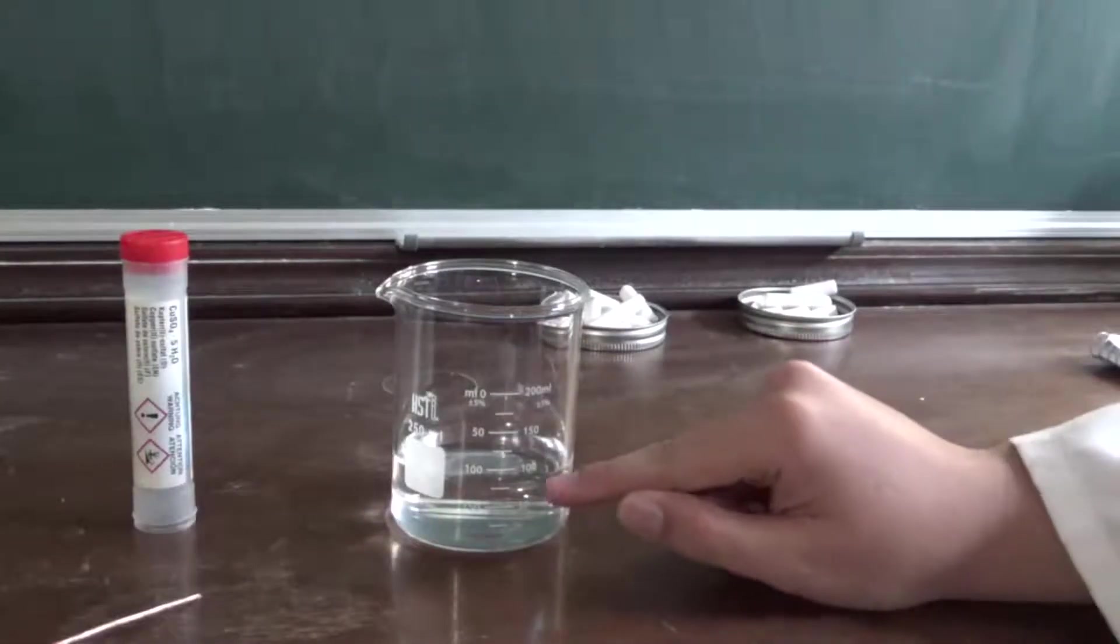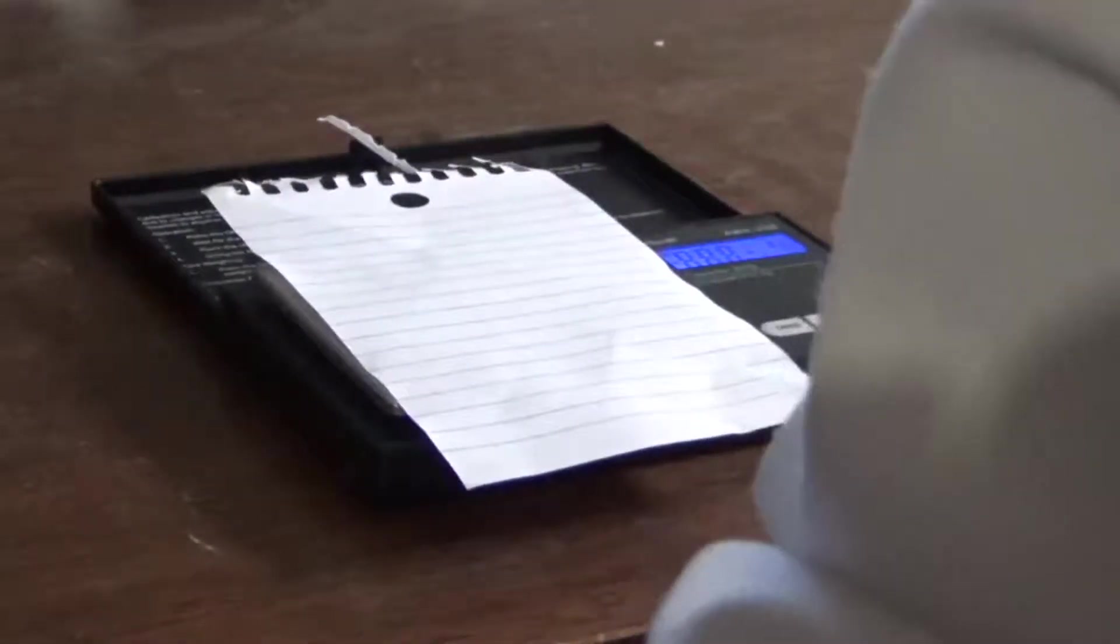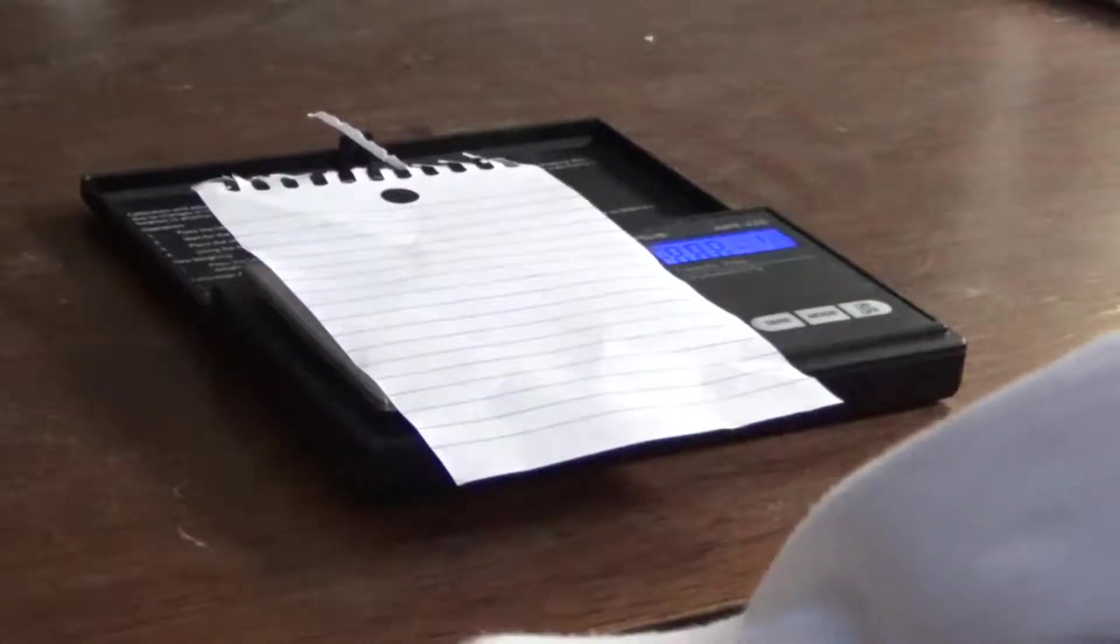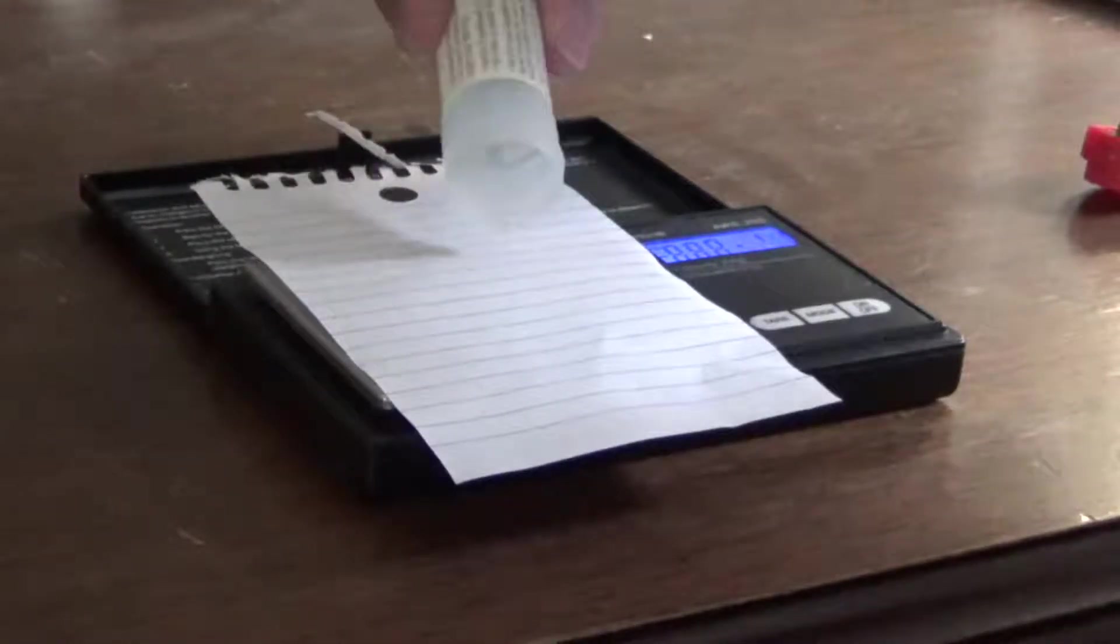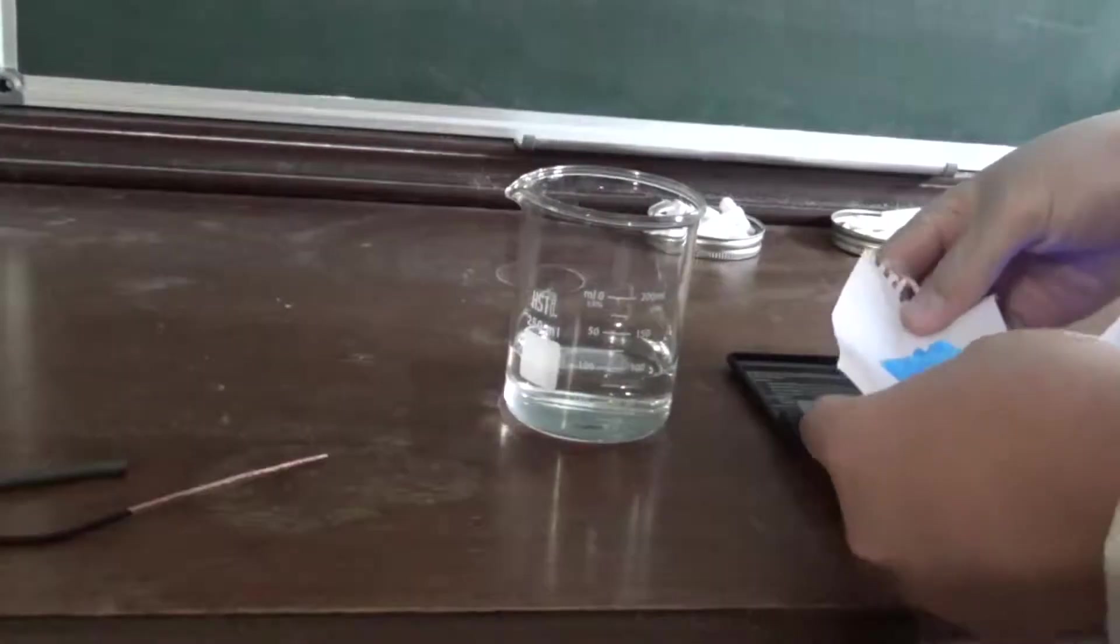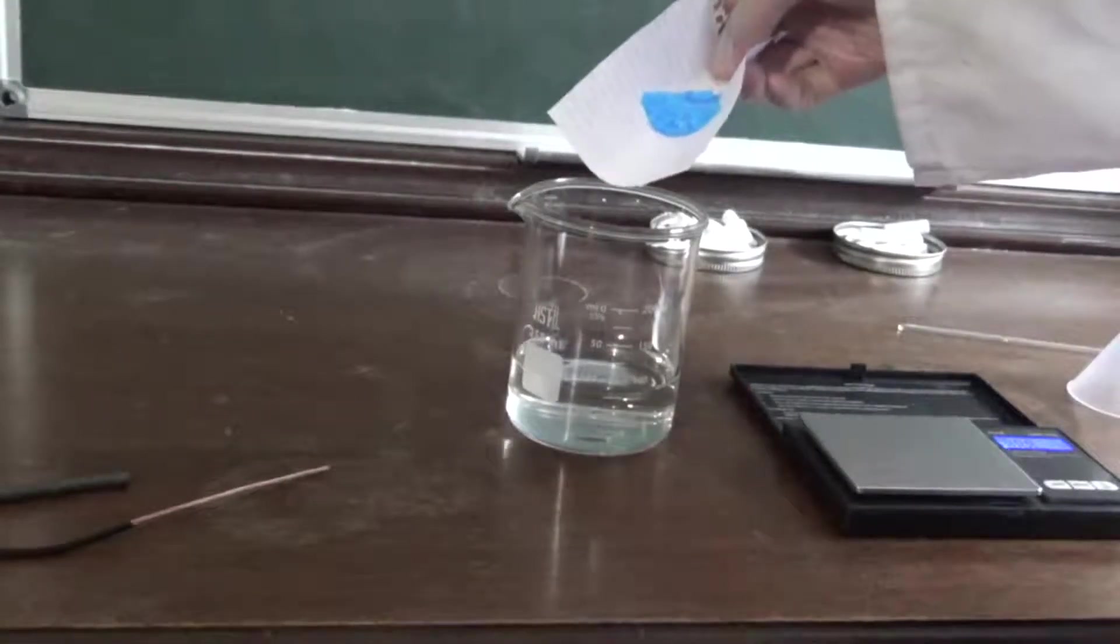Now we have a bit under a hundred milliliters of distilled water and to that we will add approximately around six grams of our copper two sulfate. I'm using a piece of paper as a weighing paper, but that should be fine. Now I'm going to transfer the five grams of copper two sulfate into the beaker of water.